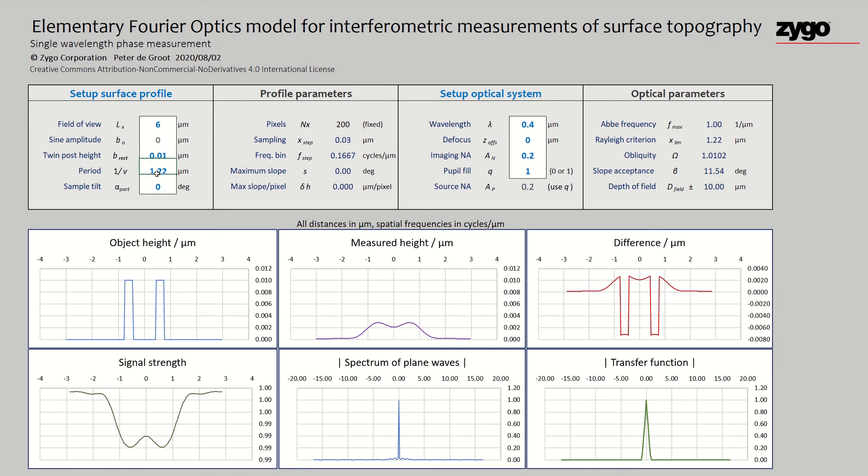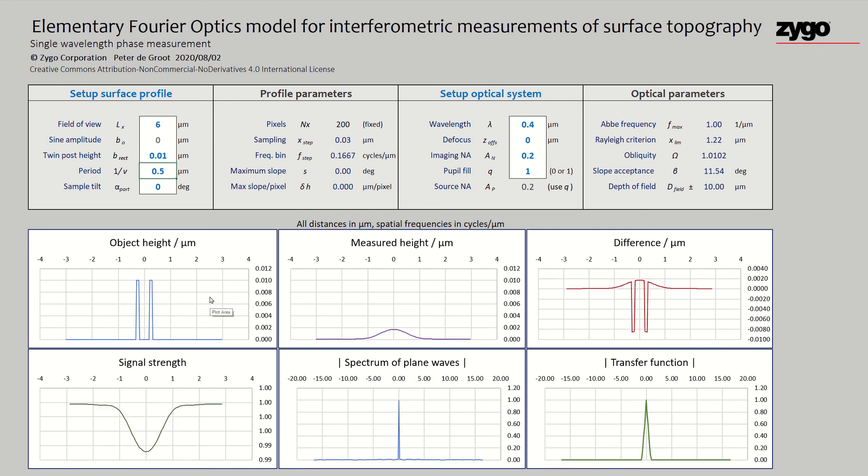Let's be greedy. Let's see if we can go to half a micron. Well, we can't. It's now just one blur here. Maybe you could figure this out with a deconvolution algorithm. That would be super resolution. If you know that you have two posts here, maybe from the shape of this thing you could figure it out. But the model does predict that under those circumstances, half a micron, you're just not going to see it.